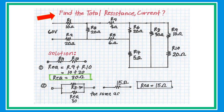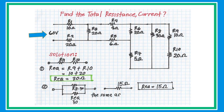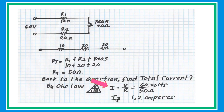Back to the previous equation: find the total resistance and current. Given that the voltage is 60 volts, using Ohm's law — I = V / R — with voltage of 60 volts and total resistance of 50 ohms, the total current is 1.2 amperes.